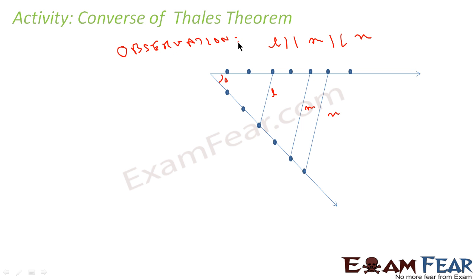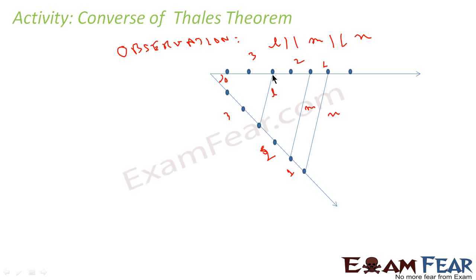Note what we did in the earlier case: we drew the parallel lines and observed that the ratio was equal. In this case, we are assuming the ratio is equal — 3 units and 3 units, 5 and 5, so the ratio is constant — we draw the lines and then observe that the lines are parallel. This is why it is the converse of Thales.